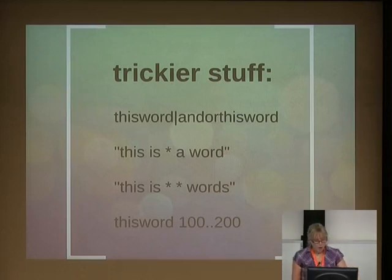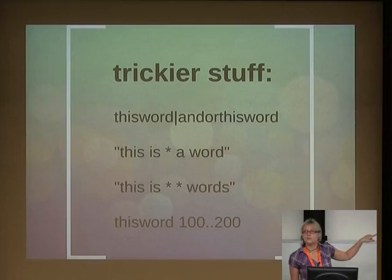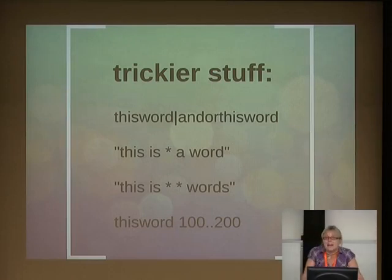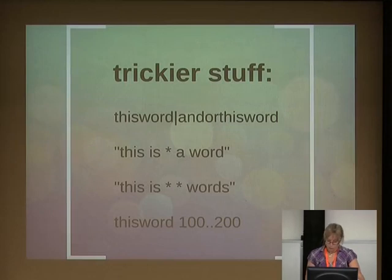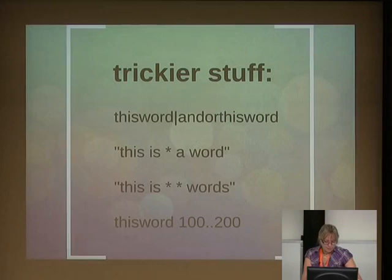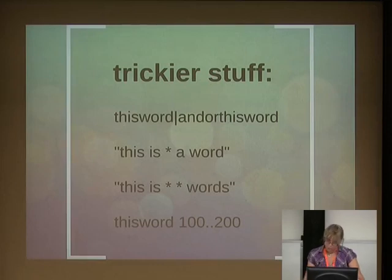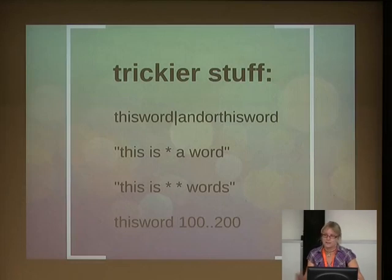If you use the pipe character — top right of your keyboard, programmers will know what it's called — it does an AND/OR search for a word, which is quite handy. You can also use a capital OR between terms to do the same. It also finds sentences with missing words, so you can use a wildcard in there. If you use asterisks, it will find words in a phrase where there are two versions and it's just one keyword that's different.